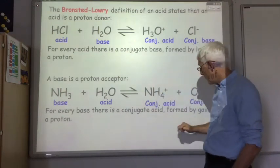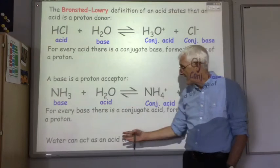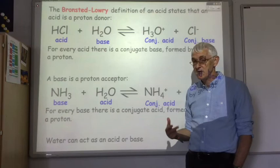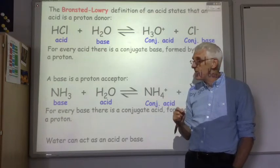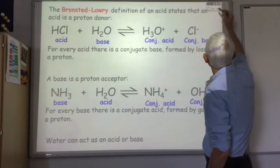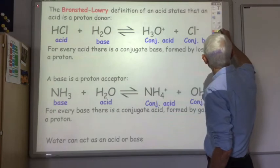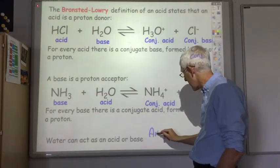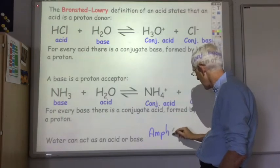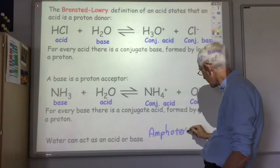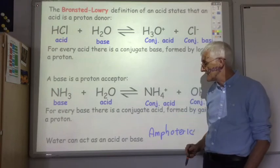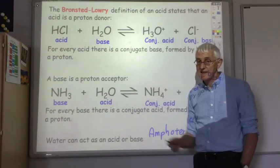And as you can see, depending on the reaction, water can act as either an acid or a base. And it's not alone. It's not the only substance that can do this. And we have a special name for substances which can act as an acid or a base. So water is an example of an amphoteric substance because it can sometimes act as an acid and sometimes act as a base.